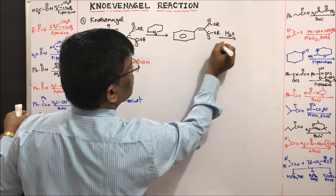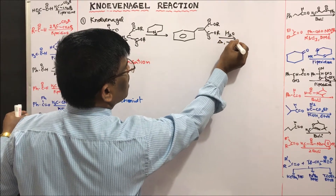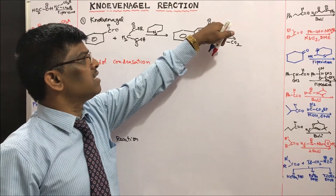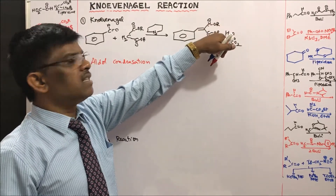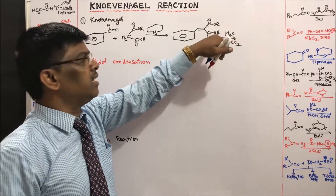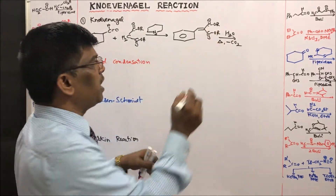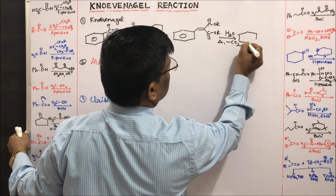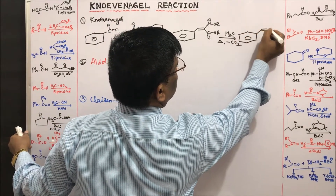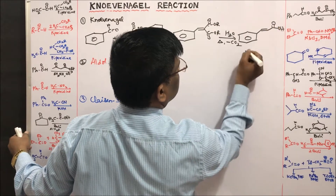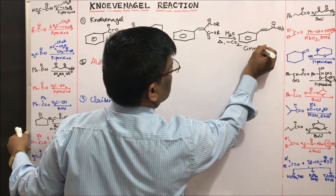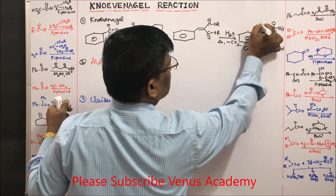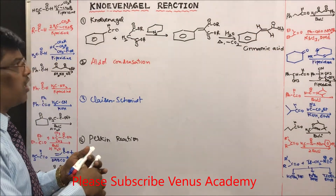This diester, upon hydrolysis followed by heating, loses one of the two carboxylic acid groups. Under hydrolysis conditions, both esters hydrolyze to acids. Among these two acids, one acid undergoes decarboxylation to give cinnamic acid. So the final product of the Knoevenagel reaction is cinnamic acid.